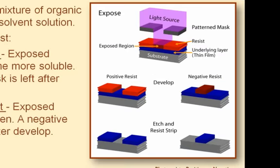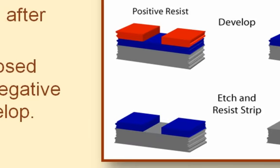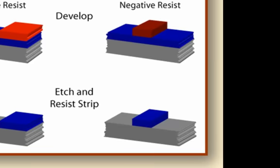This graphic illustrates the difference. With positive resist, the regions of the resist exposed to UV light become more soluble. When developed, the soluble resist dissolves and the unexposed resist remains on the wafer, resulting in a positive resist pattern on the wafer.